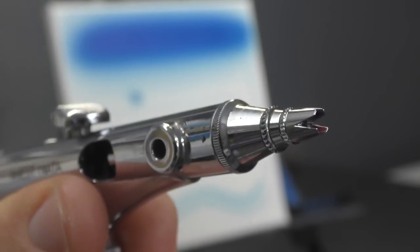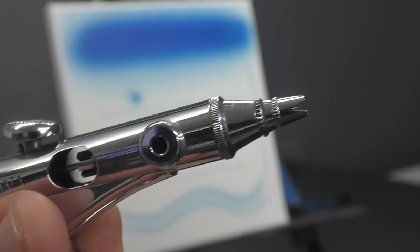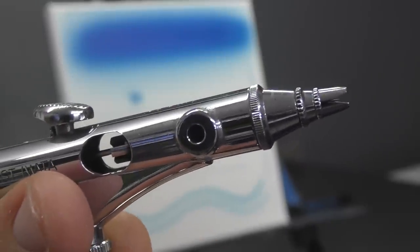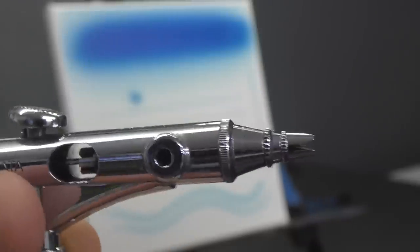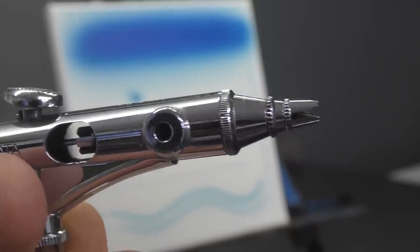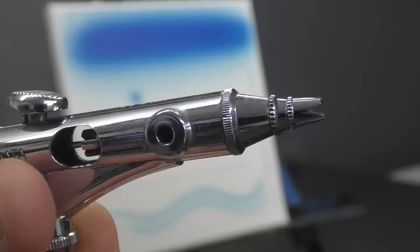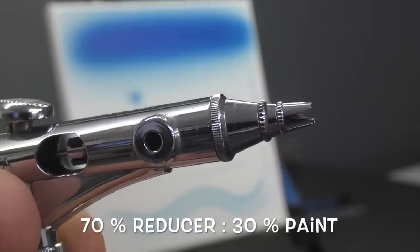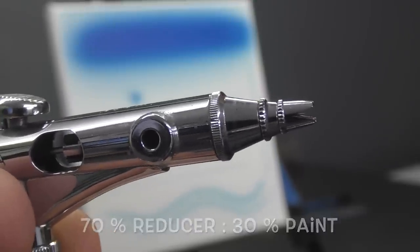So the next brush that we're going to try out is the Iwata CMSB Micron. This one runs a 0.18 mil needle nozzle setup. Now this one I use for finer detailing, obviously with the 0.18. And I'm going to run at a 70-30% mix for this one. So 70% reducer and 30% paint.